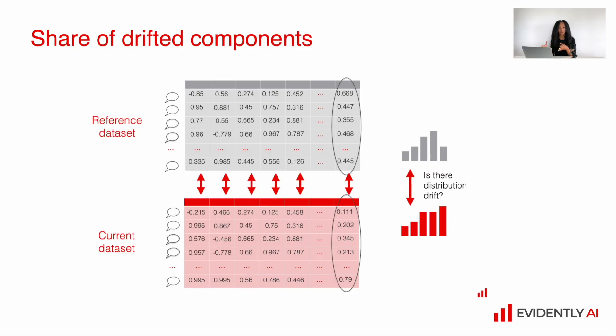However, together with model-based drift, we can use the share of drifted components, because when we deal with embeddings, each component is a numerical value. And if we treat each component independently, then we can use drift detection methods which can be applied for numerical values. For example, statistical tests or distance-based metrics or whatever we used and discussed before for structured data.